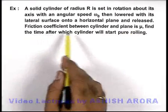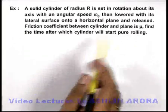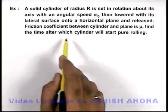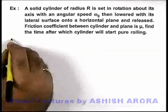The friction coefficient between the cylinder and plane is mu, and we are required to find the time after which cylinder will start pure rolling.